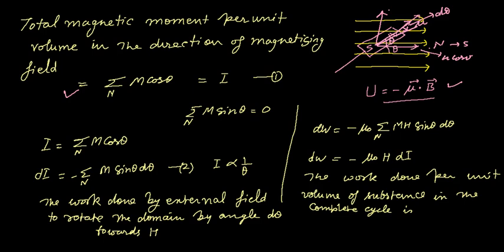dI/dθ is equal to differentiation of this with respect to θ. You will get minus sin θ and M as it is.